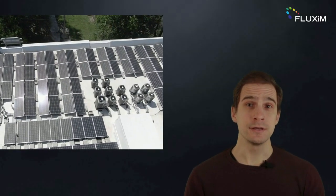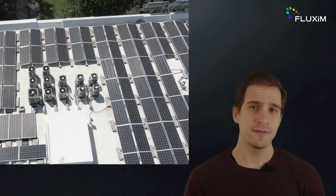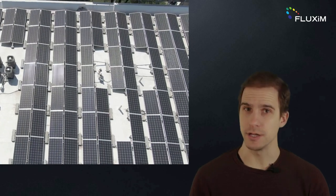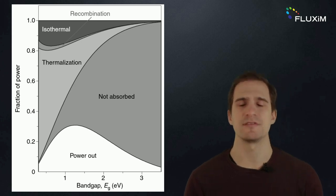Silicon-based single-junction PV modules make up 95% of the PV market. The most efficient solar cell currently available has an efficiency of 26.8%, while the theoretical limit, the Shockley-Queisser limit, is about 32%. The efficiency is limited by three types of losses.